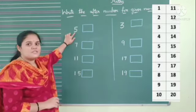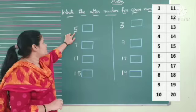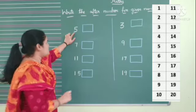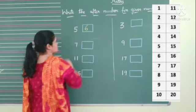Here, first number is 5. After 5, the next number is 6. Write number 6.